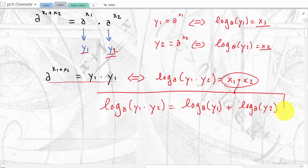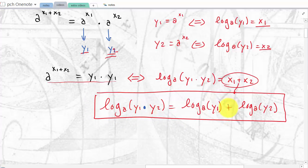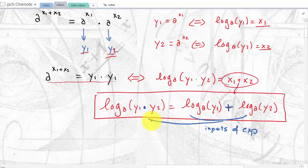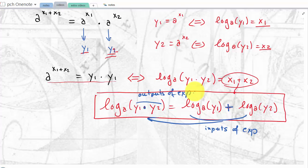We've shown that the log function transforms a product in the input into a sum in the output. This is not surprising because the output of the log is the input of the exponential, and the input of the log is the output of the exponential. So it makes sense: if with one function you transform a sum into a product, then with the inverse function you transform a product into a sum.